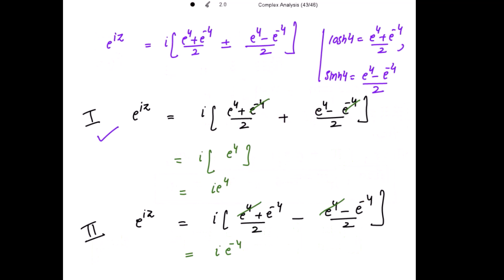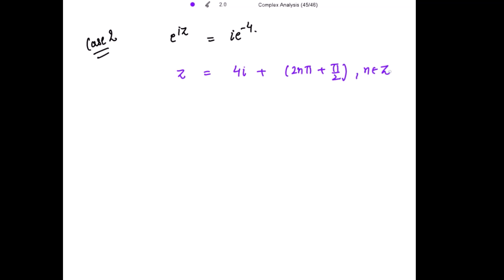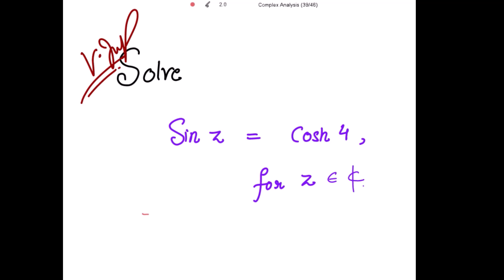Similarly, for Case 2, when e to the power iota z equals iota e to the power negative 4, we get z equal to 2n pi plus pi by 2 plus 4 iota, where n belongs to the set of integers. So the two sets of solutions for the given equation are: z equals 2n pi plus pi by 2 plus 4 iota, or z equals 2n pi plus pi by 2 minus 4 iota, where n belongs to the integers.